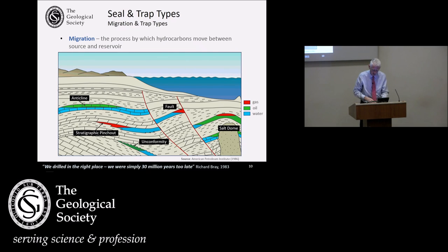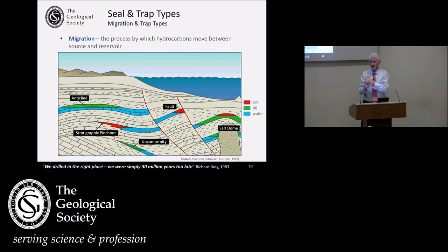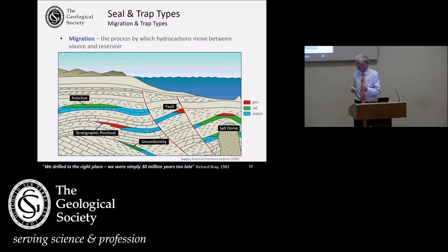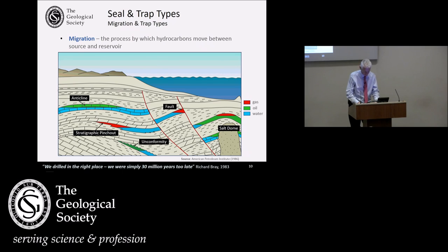Traps are good, but the question is: was the trap there when your oil migrated? If it wasn't, you've just missed the bus. You need to measure your entire thermal history, knowing when your oil migrated, whether your reservoir, trap, and seal were all in place — and whether after all that, something else happened such that the trap broke or leaked. There are plenty of examples of exhumed oil fields with oil at surface. The Canadian tar sands is basically a failed trap — we drilled in the right place but were simply 30 million years too late. So you think about trap presence and trap effectiveness.